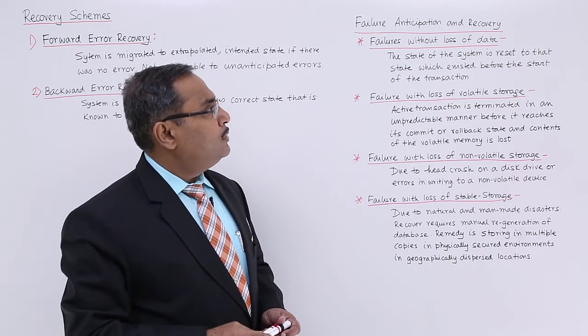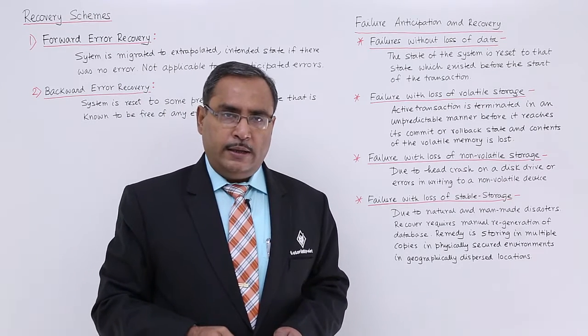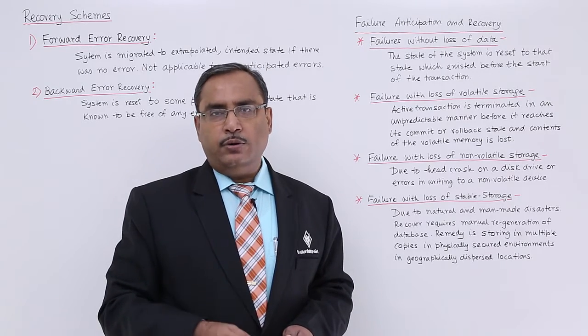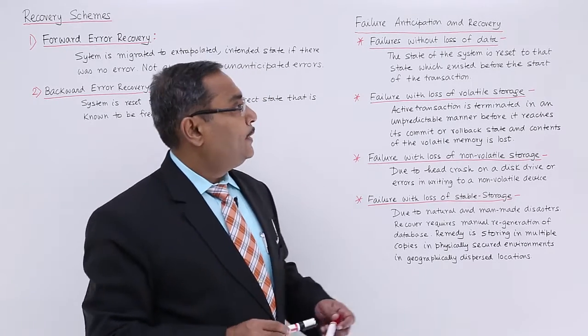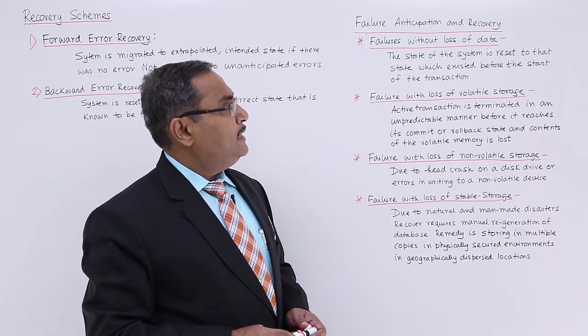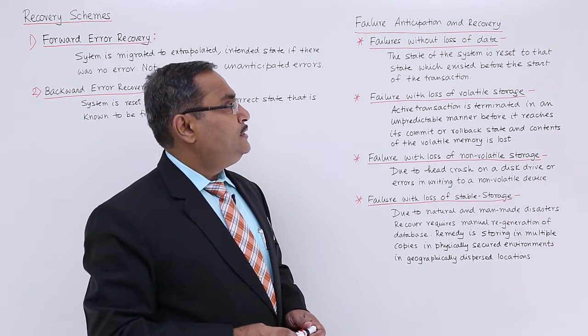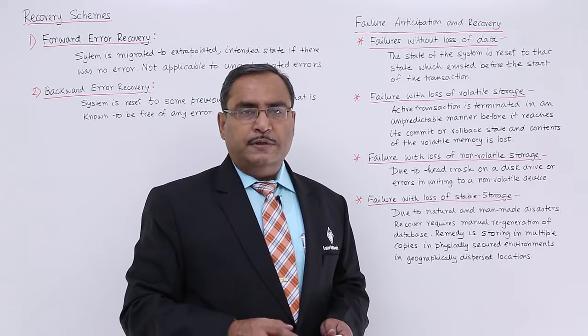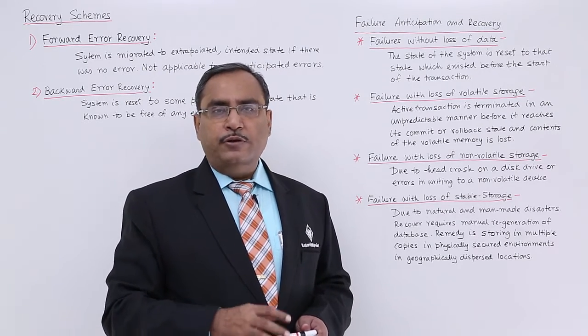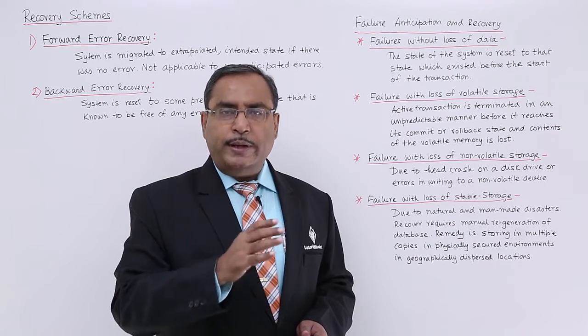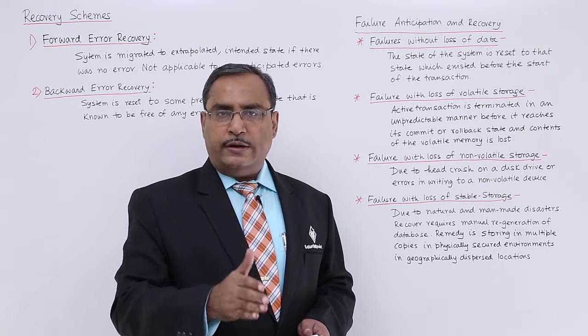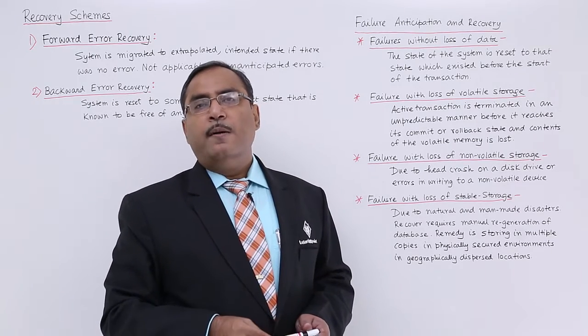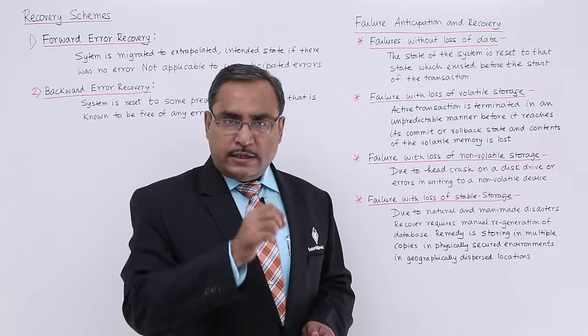First one is failure without loss of any data. That means the failure has occurred, the system has crashed due to that failure, but there is no loss of data. The state of the system is reset to the state which existed before the start of the transaction. That means the loss of data has been removed because we are issuing the backward error recovery so that it will be retrieving our system back to some previously known consistent state.